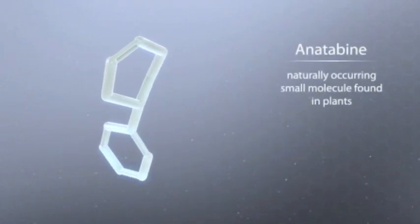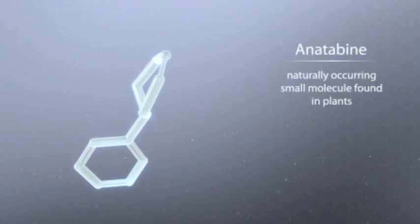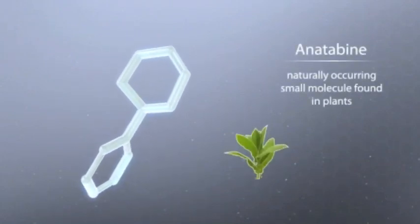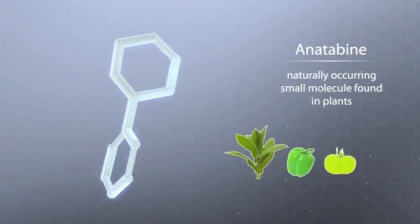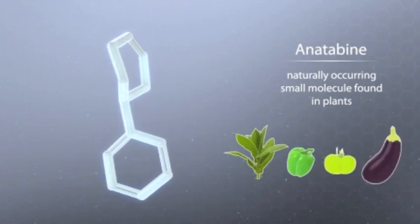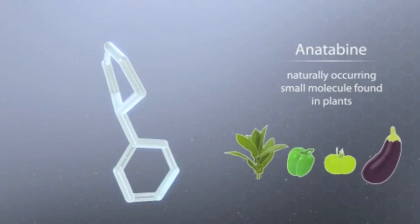Anatobine is a naturally occurring small molecule that is found in some plants, including tobacco, green peppers, green tomatoes, and eggplant. It can also be synthesized in the laboratory.